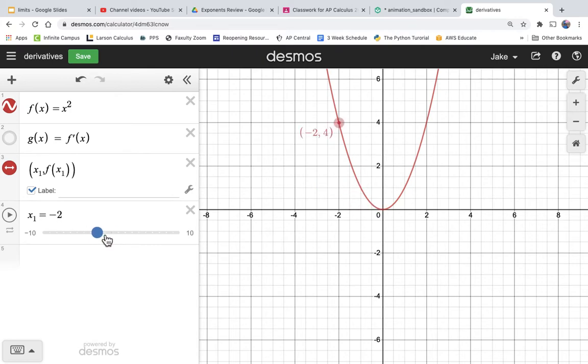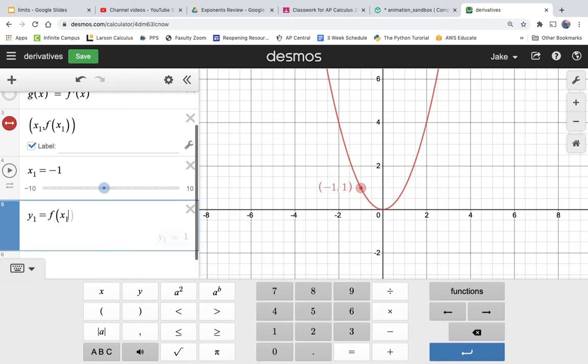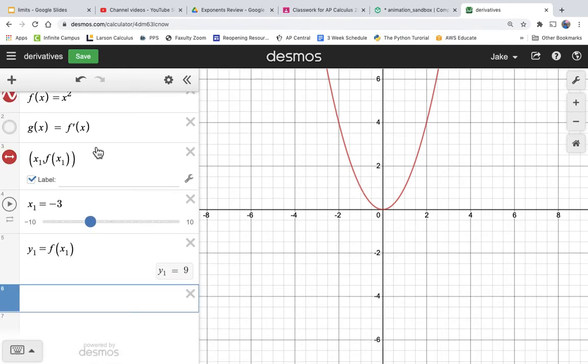Let's add a y1 value. So let's just add here, let's just say y sub 1 is equal to f of x sub 1. Okay, that just will help Desmos out. So we can move the x around and that y1 is changing.